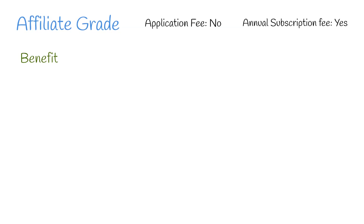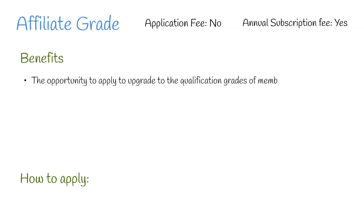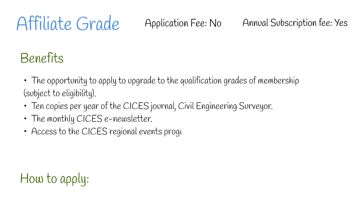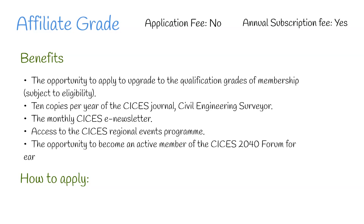Next we have Affiliate. Similar to Student, this grade offers no designation and requires no application fee; however, there is an annual subscription fee. This grade is for anyone who has an interest or involvement in the construction industry. Benefits of membership include the opportunity to apply to upgrade to the qualification grades of membership subject to eligibility, 10 copies per year of the CICES journal Civil Engineering Surveyor, the monthly CICES e-newsletter, access to the CICES regional events program, and the opportunity to become an active member of the CICES 2040 forum for early career members.